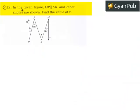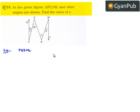Moving on to question number 15. In the given figure, QP is parallel to ML and other angles are shown. Find the value of x. Given that QP is parallel to ML, we need to find the value of x.